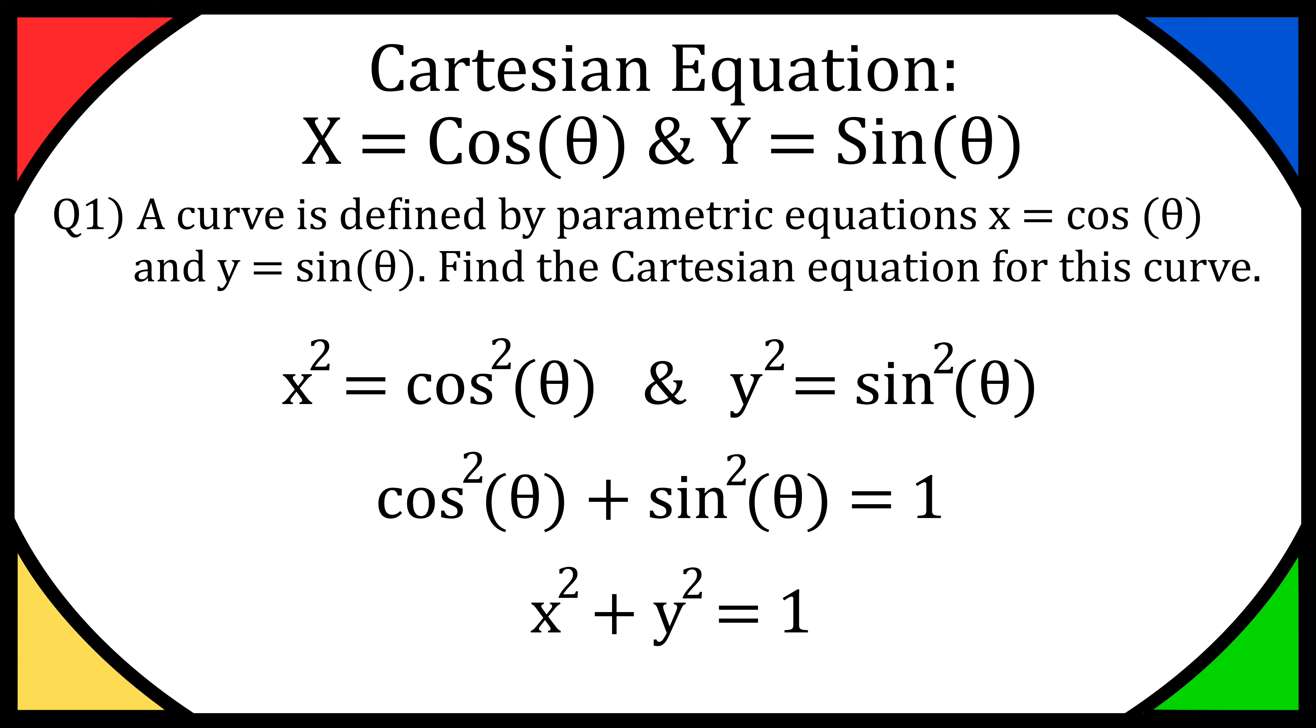If you're a bit confused about the notation where I've done cos to the power of two theta, that basically just means cos squared and sine squared, or cos of theta squared and sine of theta squared. That's just how you write it.